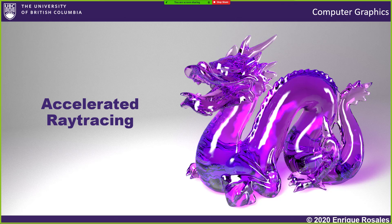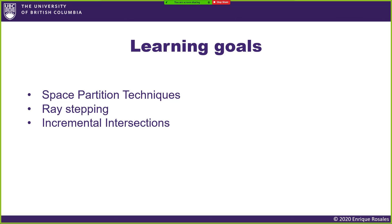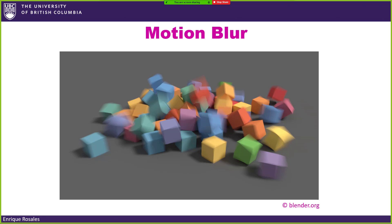These are the learning goals for today: space partition techniques. Specifically we will talk about an algorithm called ray stepping — sometimes also called ray marching, although there is another algorithm specifically called ray marching. We'll also cover incremental intersections. Ray stepping is very simple, and ray marching proper I probably won't talk about until next lecture.